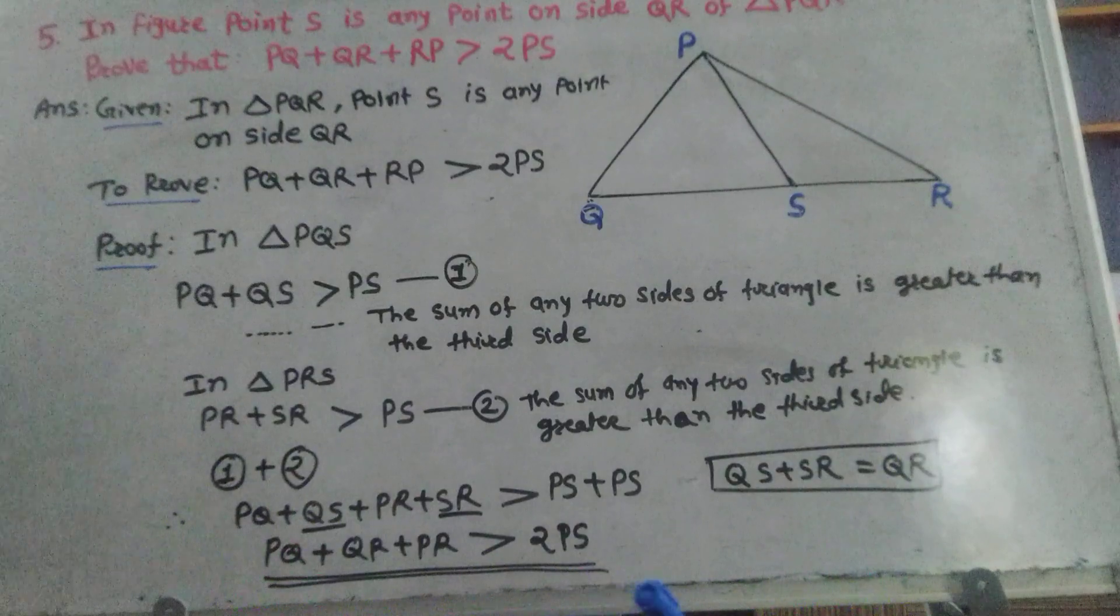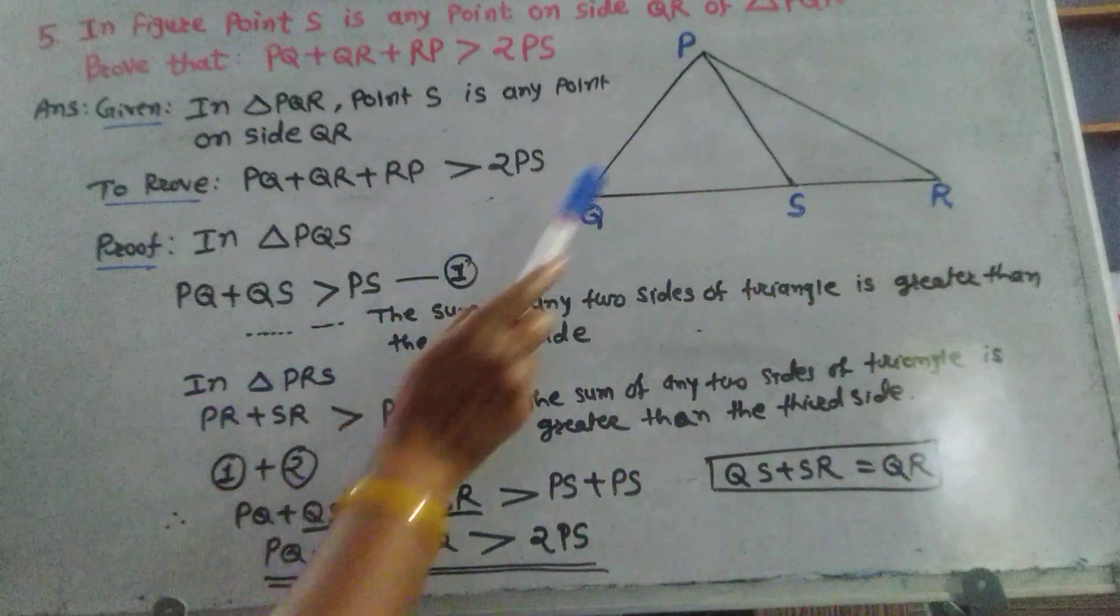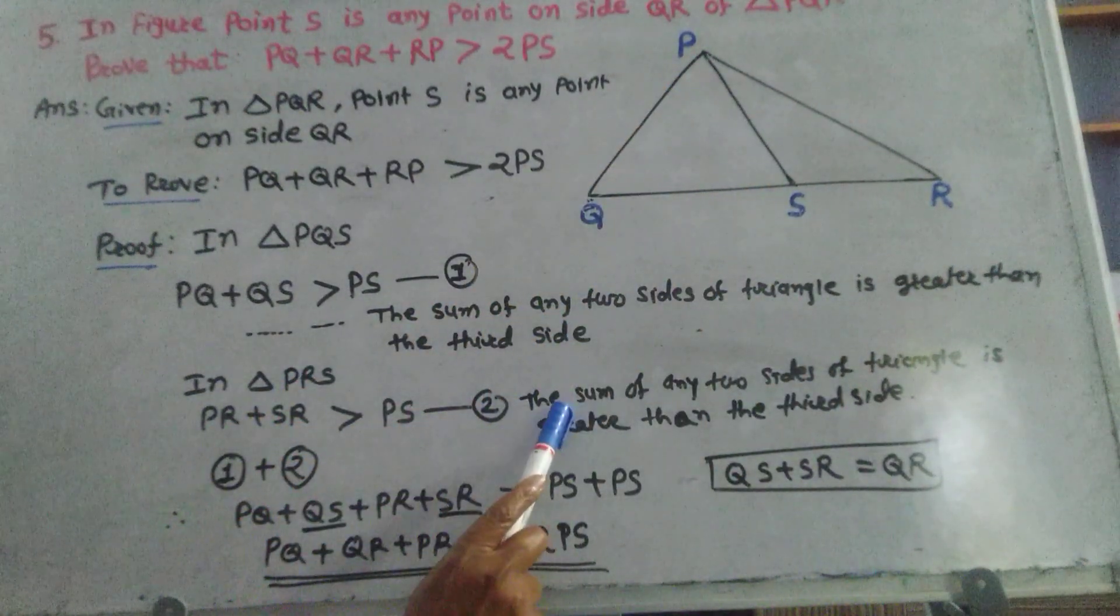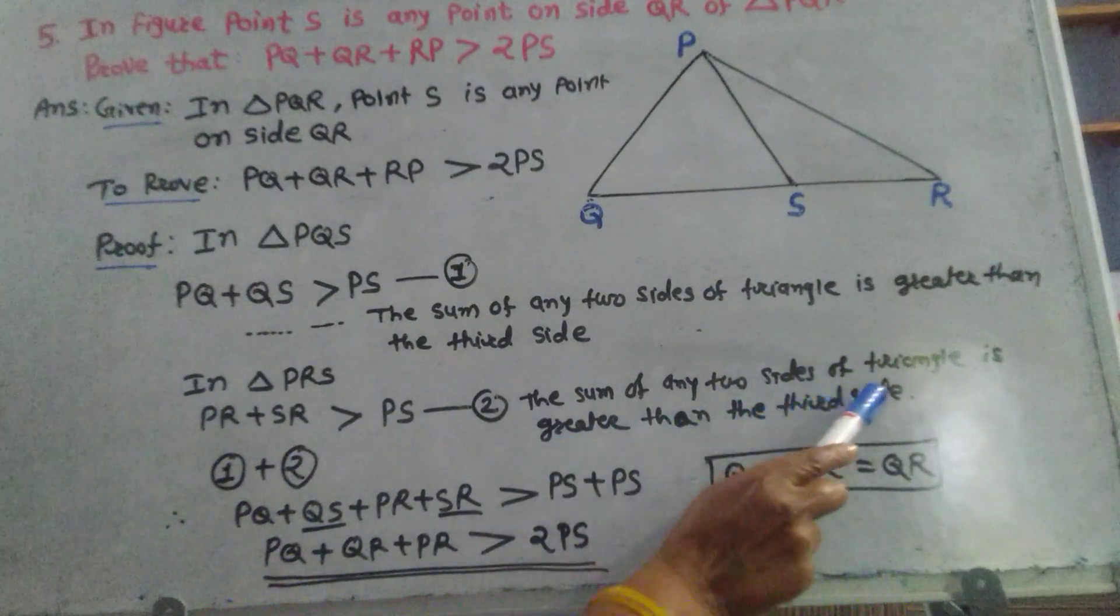In triangle PRS, PR plus SR is greater than PS, equation 2. Reason: The sum of any two sides of a triangle is greater than the third side.